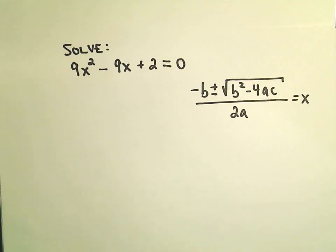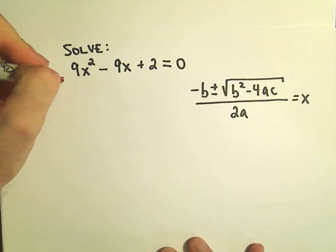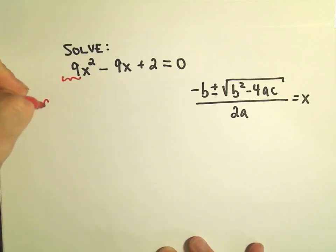In this case our a is simply going to be the number in front of the x squared. We have that a is going to be equal to positive 9, b is going to be the coefficient on the x.